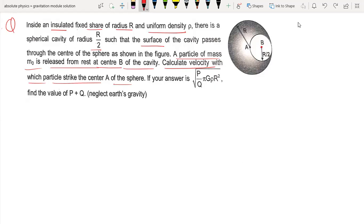We need to know that in any spherical cavity, the formula of the field is equal to 4 by 3 pi rho G into the distance between centers.